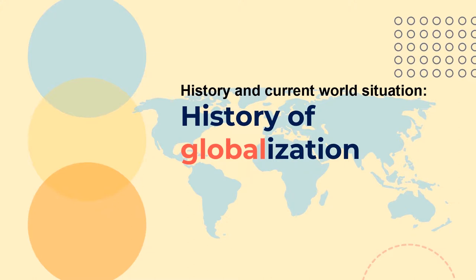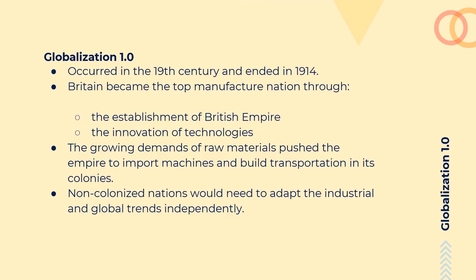Now let's talk about how we got here. By the end of the 18th century, Great Britain had started to dominate the world through the establishment of the British Empire and the innovation of technologies. Britain became the top manufacturing nation as its products were in demand all over the world. As a colonial empire, Britain was not the only beneficiary. The growing demand for raw materials pushed the empire to import machines and build transportation in its colonies.